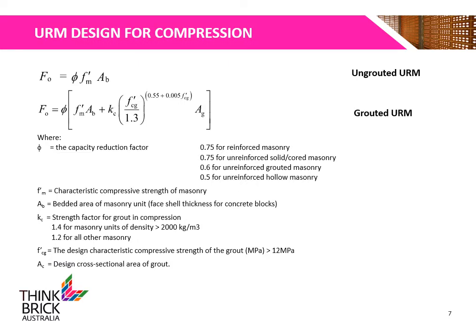Here we have two equations for determining the compressive capacity for ungrouted and grouted unreinforced masonry. The variables are: Phi, the capacity reduction factor; f'm, the characteristic compressive strength of masonry; Ab, the bedded area of the masonry unit; Kc, the strength factor for grout in compression; f'cg, the design characteristic compressive strength of the grout; and Ac, the design cross-sectional area of the grout.